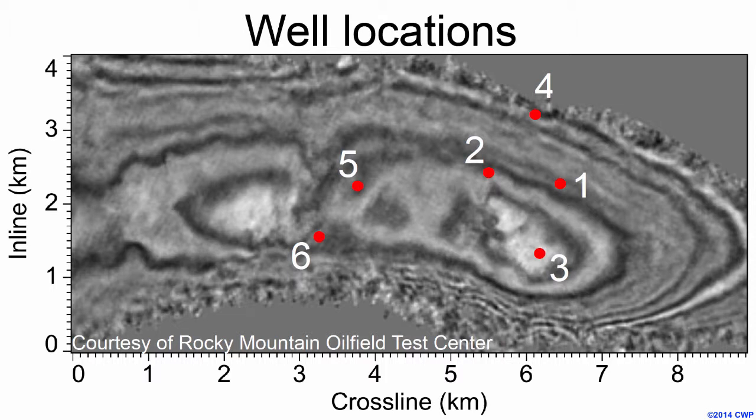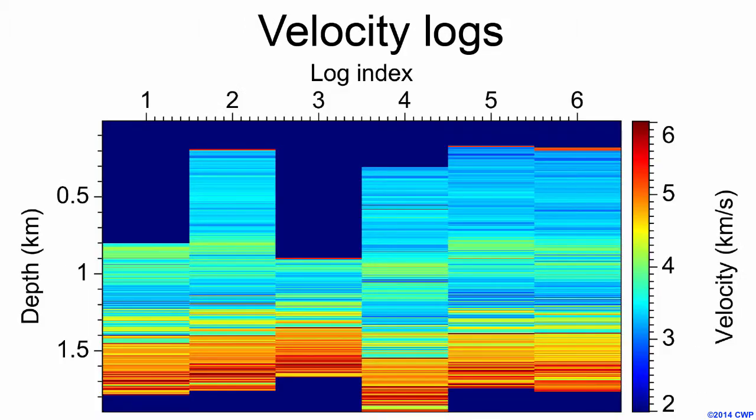This is a constant time slice at about one second through Teapot Dome. One thing to note here is that well three passes through the top of the anticline. So when we look at the velocity logs provided with this data, we can see that distinct velocity layers in log three appear at shallower depths than in any of the logs on the flanks.